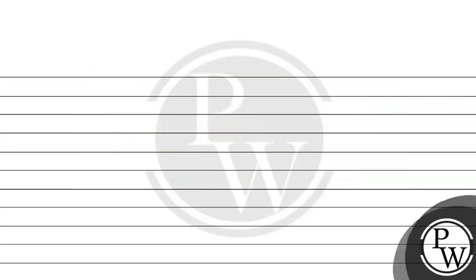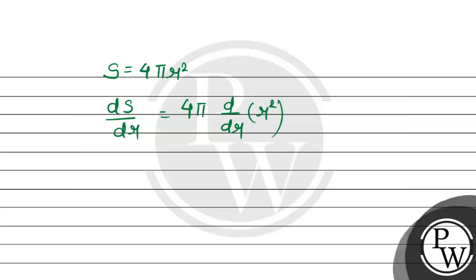Now for surface area: S = 4π r². Taking the derivative with respect to r, ds/dr = 4π times d/dr of r². Applying the general rule, we get 4π times 2 times r^(2−1) = r¹, so ds/dr = 8π r.